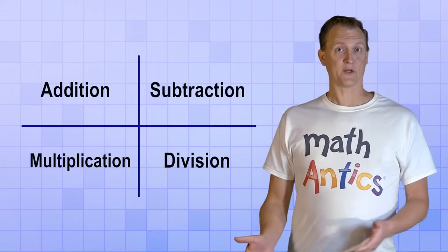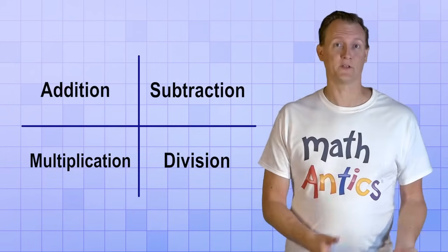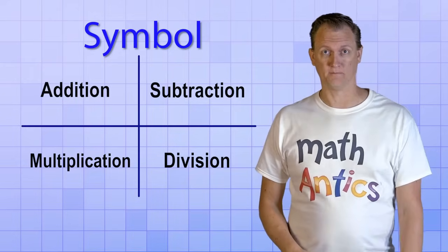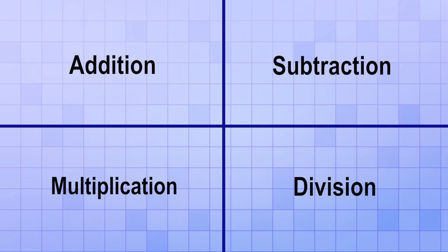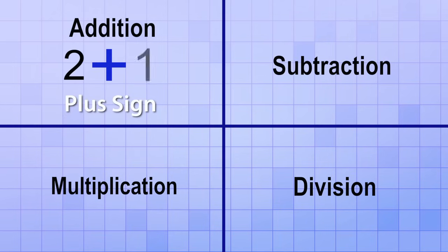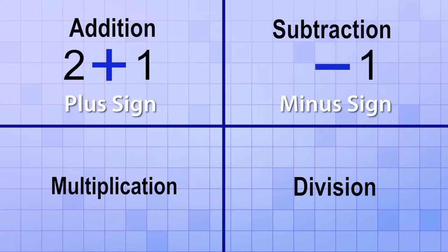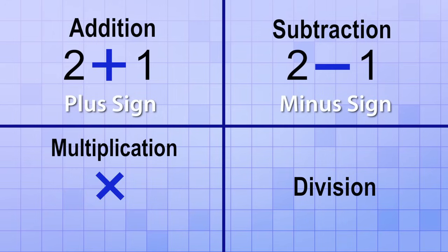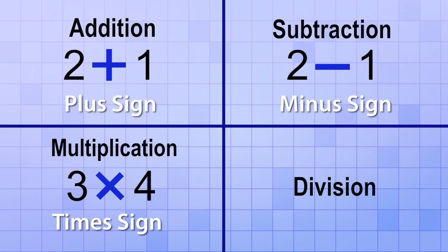To make arithmetic easier to write down, each of these operations gets its own symbol. And some of them even have more than one symbol. For addition, we use this symbol, called a plus sign, to show that two numbers are being added. So when you see a math operation like this, you just say 2 plus 1. For subtraction, we use this symbol, called a minus sign, to show when a number is being subtracted from another. You usually say 2 minus 1, or to take away 1. For multiplication, we use this symbol that looks a lot like an x — it's called the times symbol. So this problem would read 3 times 4.